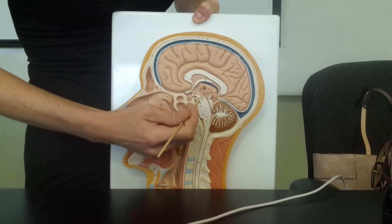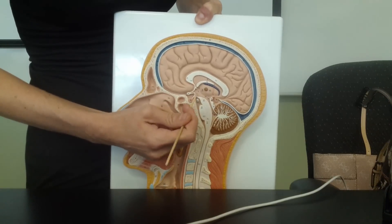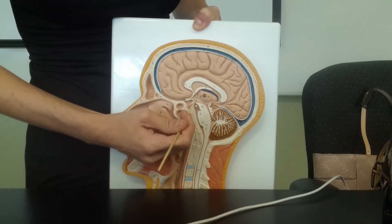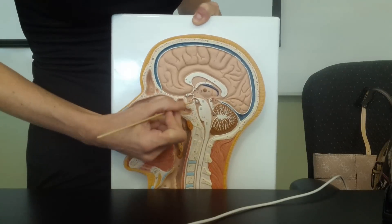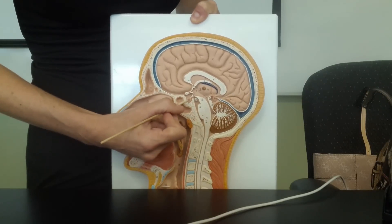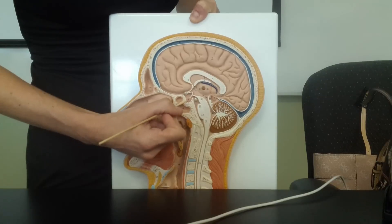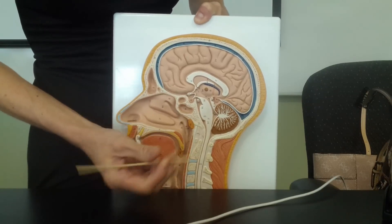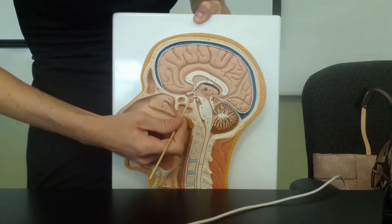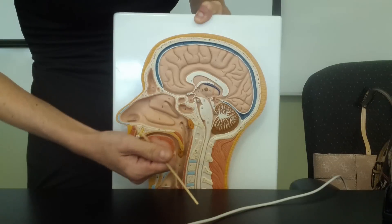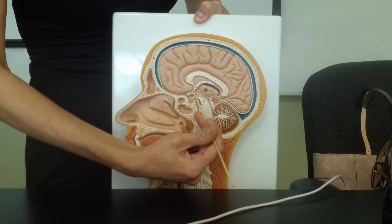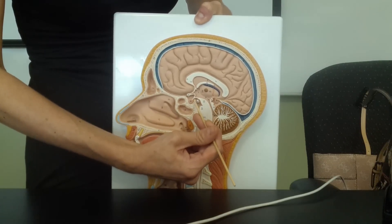Underneath the thalamus we have the hypothalamus. The hypothalamus has a major endocrine gland hanging off of it called the pituitary gland. The pituitary gland is connected to the hypothalamus via a stalk called the infundibulum.